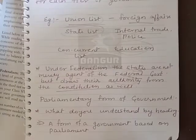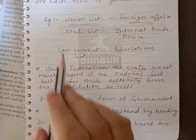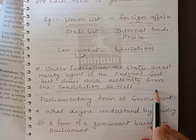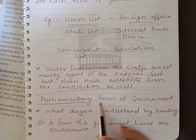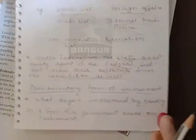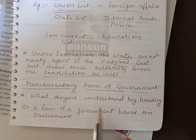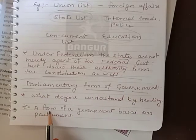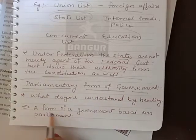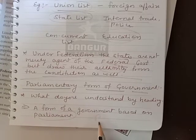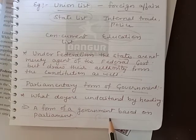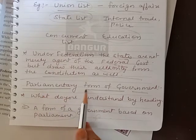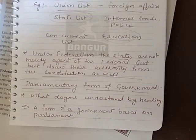Parliamentary form of government. Now, federalism is complete. The next topic is parliamentary form of government. This is a form of government that is based on the parliament.